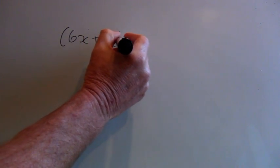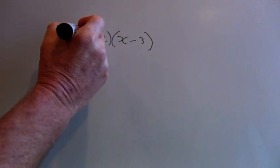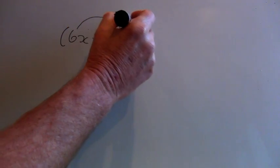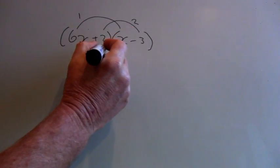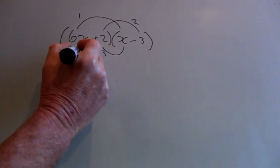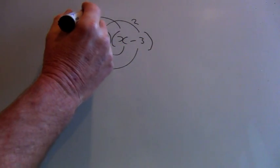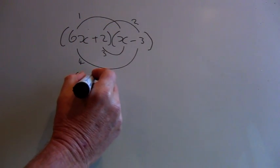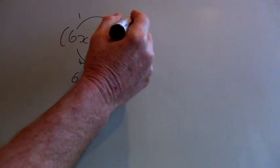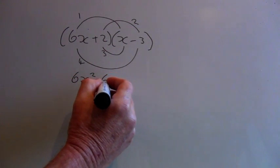6x plus 2 times x minus 3. Again drawing the foil in — it's always a good idea to draw the foil. We have 6x times x which is 6x squared, plus 2 times minus 3 is minus 6.